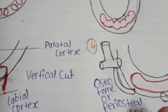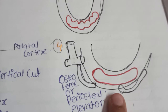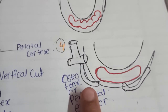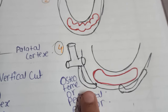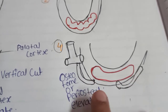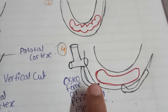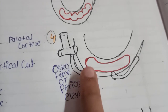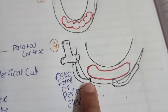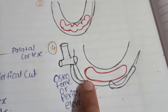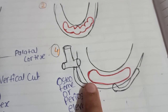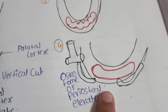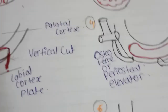The next step is the most important step — infracture. With the help of a periosteal elevator or osteotome, you can do the infracture. We start the infracture from both ends at the canine.